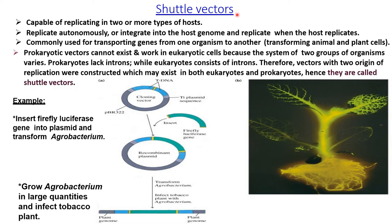Shuttle vectors are capable of replicating in two or more types of hosts. They can replicate autonomously or integrate into the host genome and replicate when the host replicates. They are commonly used for transporting genes from one organism to another, like from a eukaryote to a prokaryote, or from an animal to a plant cell. Prokaryotic vectors cannot exist and work in eukaryotic cells because the systems of these two groups of organisms vary — prokaryotes lack introns.